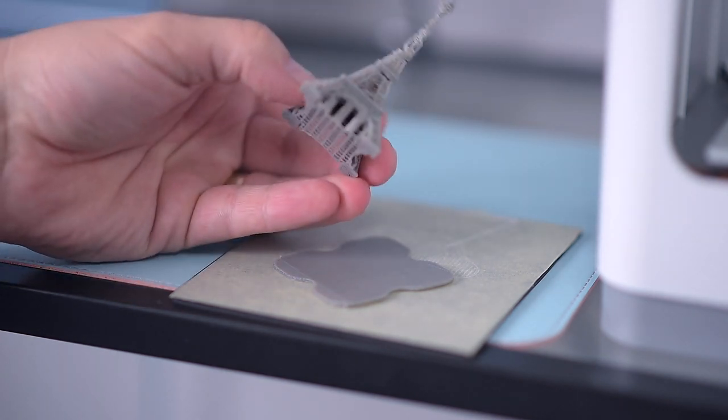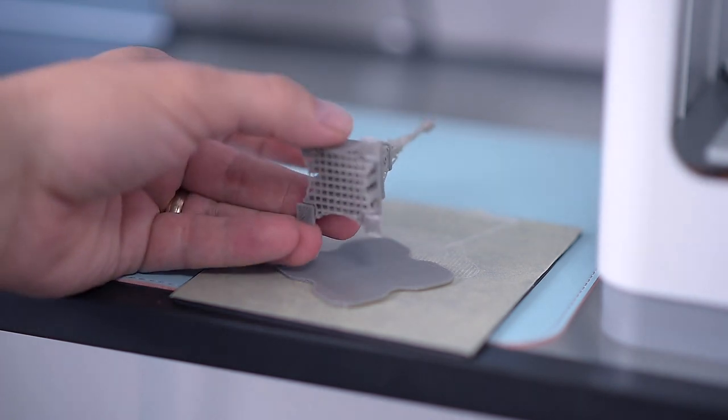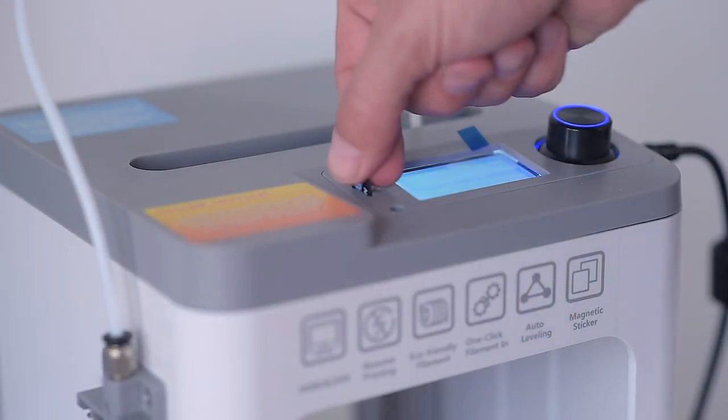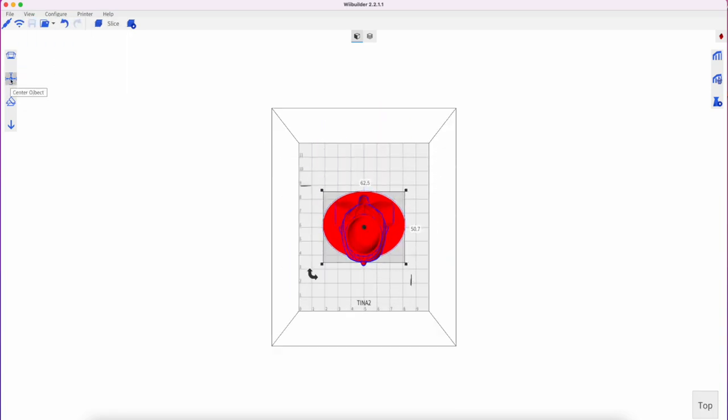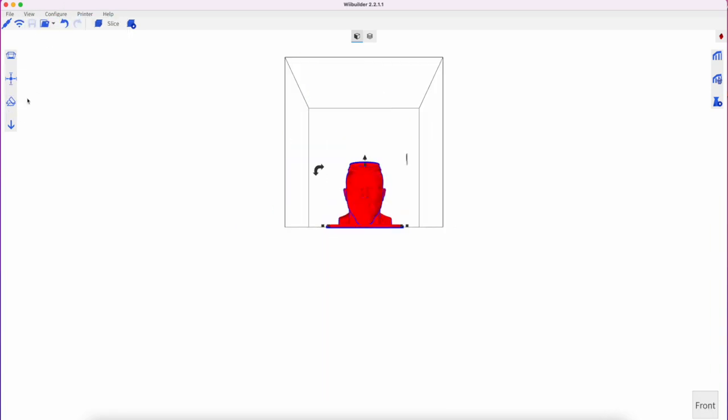Another great thing about the TINA2 printer is it runs on open source software, same as the larger, more advanced printers use. That way you won't have to relearn things when upgrading in the future if you decide to.